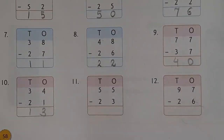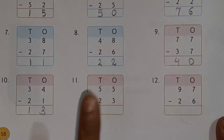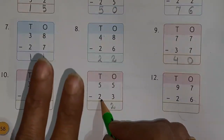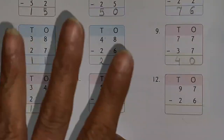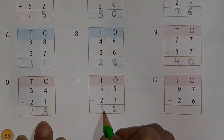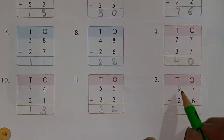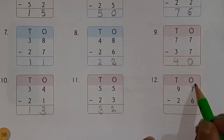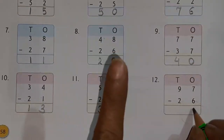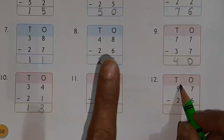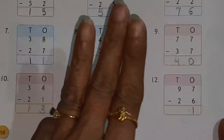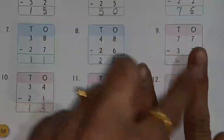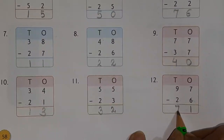Next one: 55 minus 23. For ones: after 3 count 4, 5 — 2 fingers, answer is 2. For tens: 5 minus 2 — after 2 count 3, 4, 5 — 3 fingers. So your answer is 32. Last one: 97 minus 26. After 6 count till 7 — 1 finger. Then after 2 count till 9 — 3, 4, 5, 6, 7, 8, and 9 — 7 fingers. So your answer is 71.